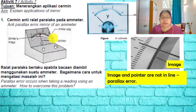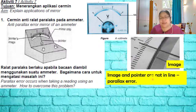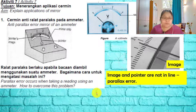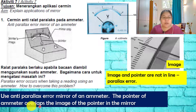When the pointer rotates, if you see two pointers — one real and one image — that means parallax error is present; the image and pointer are not in line. The correct reading is when the image is exactly overlapped by the pointer. This is how we overcome the problem using the anti-parallax error mirror: the pointer of the ammeter overlaps the image of the pointer in the mirror.